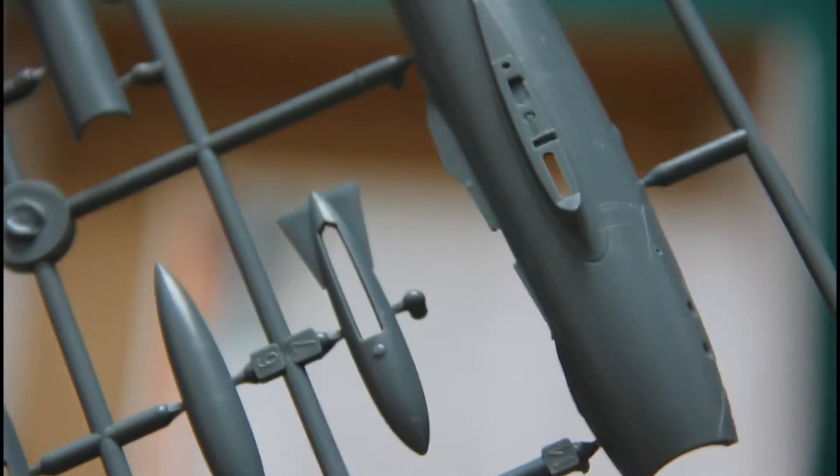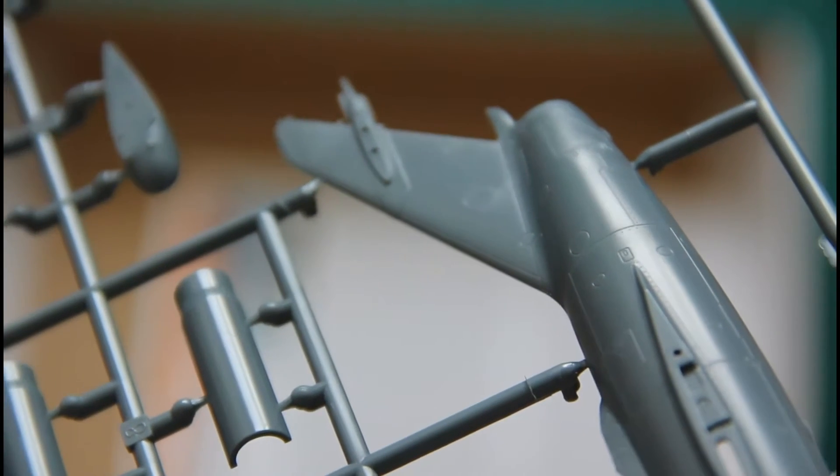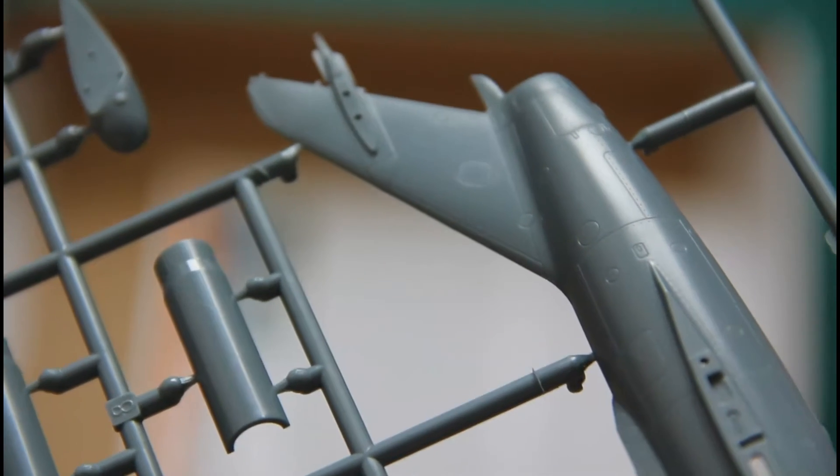Last but not the least is a sprue with fuselage halves. This is absolutely new because this is a twin seater and before Eduard was producing only the single seater version. So here you can see the fuselage half which is molded together with the tail fin but still we have separately molded rudder.